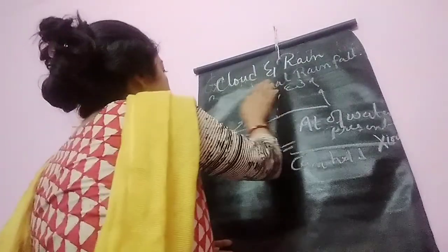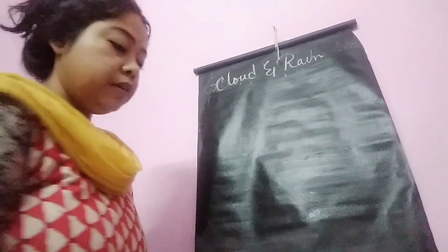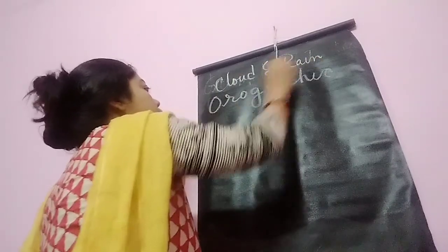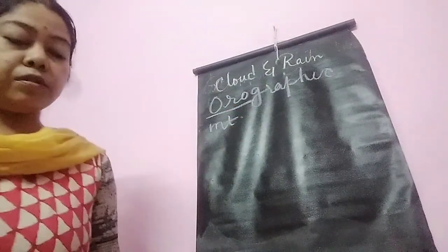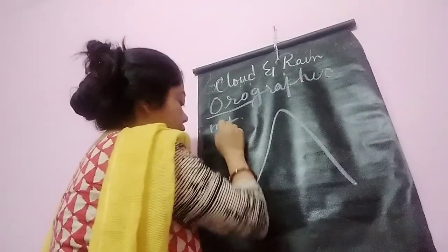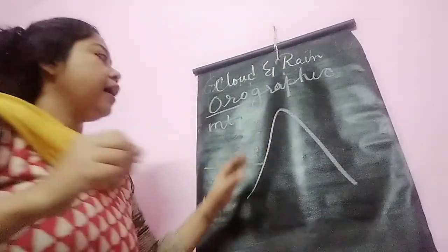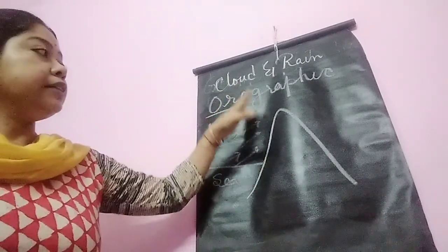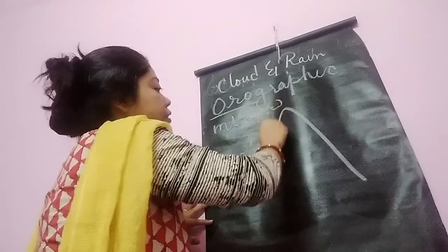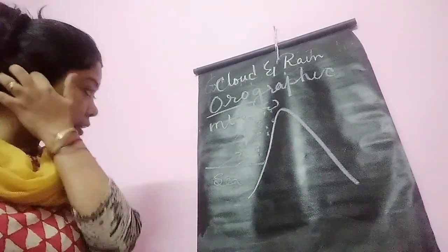Now we go to orographic rainfall. The word 'oros' means mountain. When any mountain stands in the path of a moist wind, the moisture rises and accumulates on one side of the mountain. The air strikes that side and causes rainfall — clouds form and rainfall occurs on this side of the mountain. This side receives the maximum amount of rainfall and is known as the windward side of the mountain.